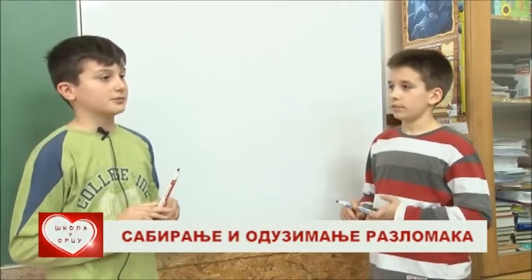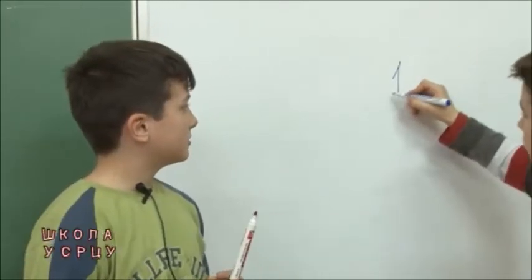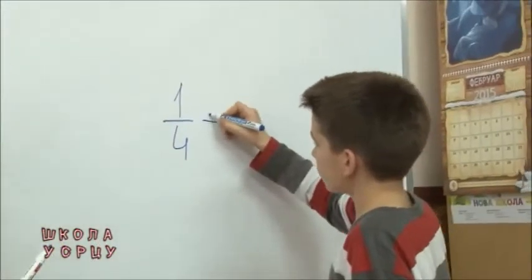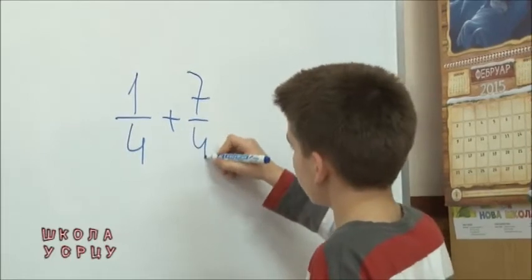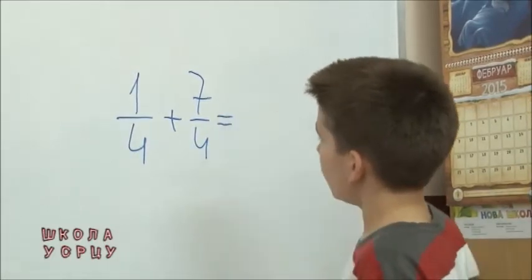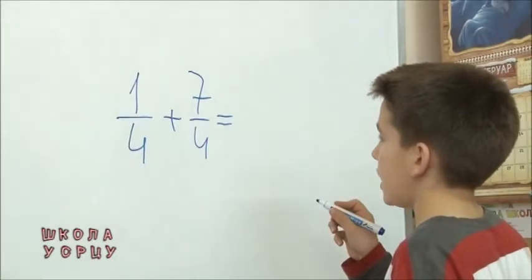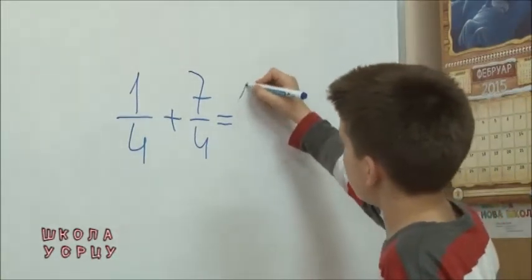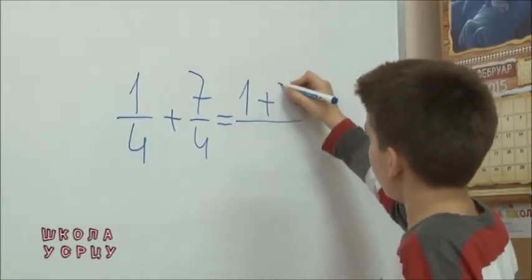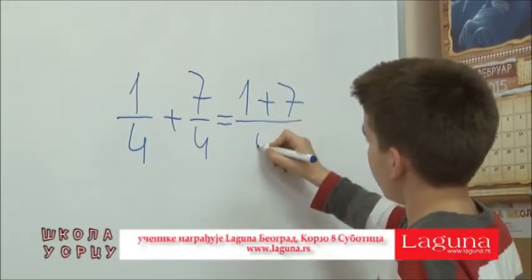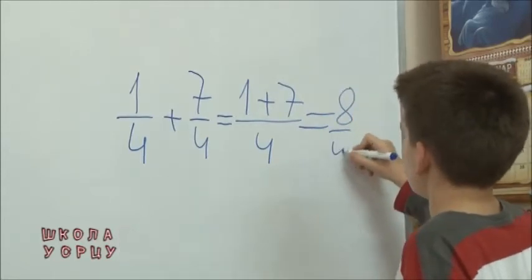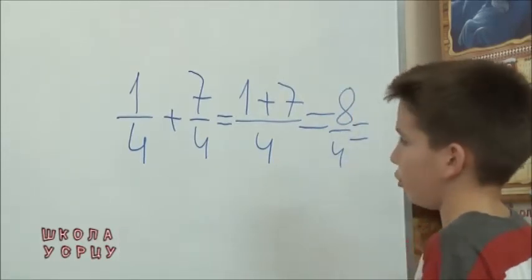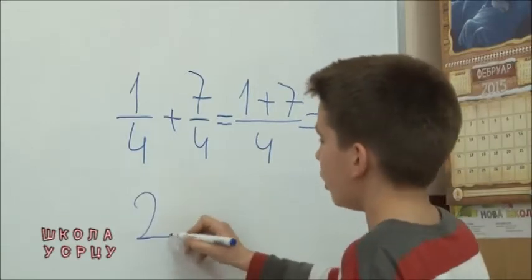Počet ćemo od sabiranja razlomaka istih imenilaca. Jedna četvrtina plus sedam četvrtina. Jednako je — sabrećemo brojioce. To je jednako osam četvrtina, što možemo da pretvorimo u mešoviti broj, što bi bilo dva cijela.